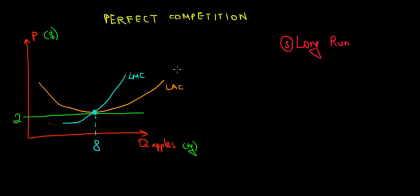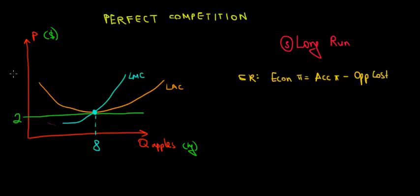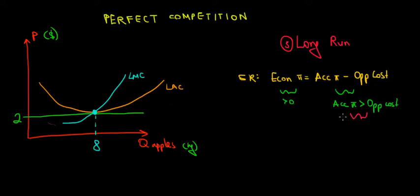Recall what happens in the short run: our economic profit, which is the difference between accounting profit and the opportunity cost, is positive. We already saw in the previous video that when we have a positive economic profit, by definition it means our accounting profit is better than the opportunity cost. Working with our example, that means the profit from selling apples is better than the profit from selling bananas.